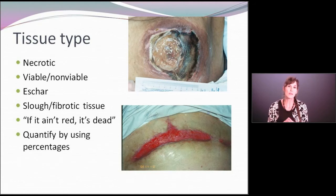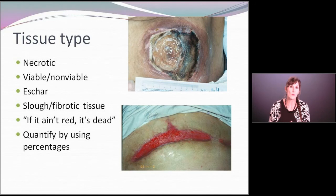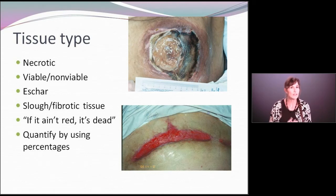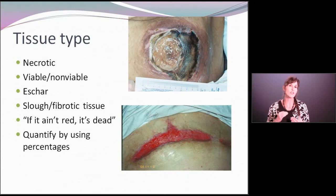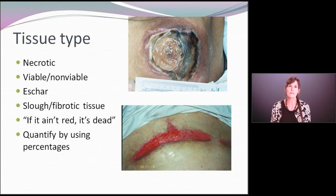As you are assessing a wound, one of the things that's very important is you want to be able to determine the type of tissue in the wound because that's also going to guide some of your topical therapy. And if you have a wound that has necrotic tissue and that necrotic tissue is slowly decreasing over time, that certainly is an indication that that wound is progressing or improving — a positive parameter that you're looking for.